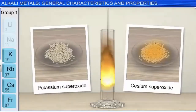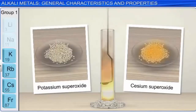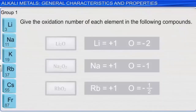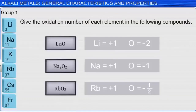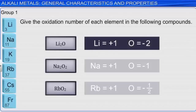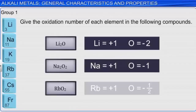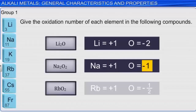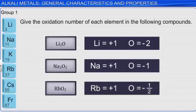Determining the oxidation number of each element in several compounds: recall that the sum of oxidation numbers must be zero for a neutral compound. For lithium oxide (Li2O), since each lithium ion has an oxidation number of +1, the oxygen ion must have a charge of −2. For sodium peroxide (Na2O2), since each sodium ion has an oxidation number of +1, each oxygen in the peroxide ion must have an oxidation number of −1. For rubidium superoxide (RbO2), rubidium has an oxidation number of +1, so each oxygen in the superoxide ion must have an oxidation number of −1/2.